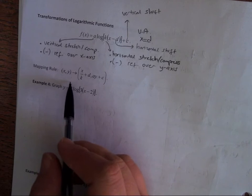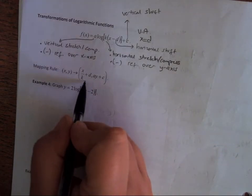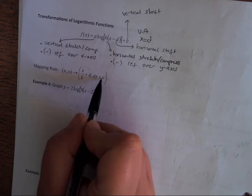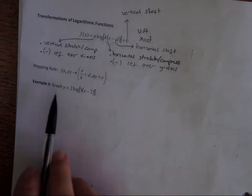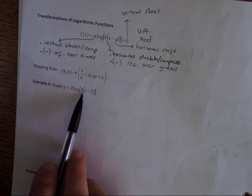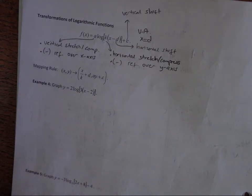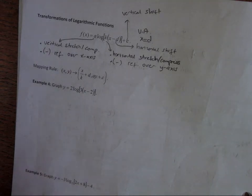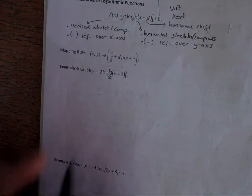The value c does a vertical shift, moving the graph up or down. Also remember the mapping rule, because we get points from the parent function and use it to find points for the transformed function. The mapping rule is: (x, y) → (x/k + d, ay + c).